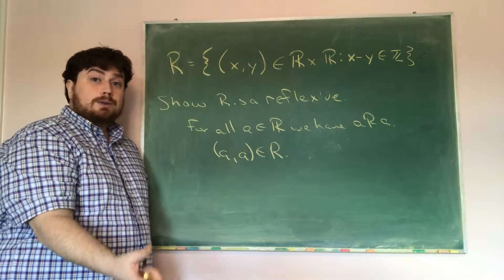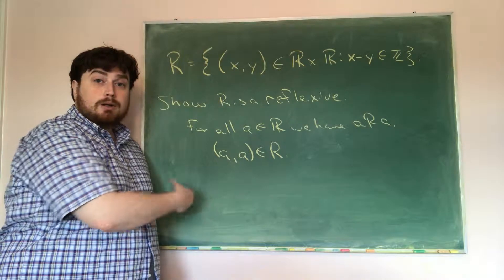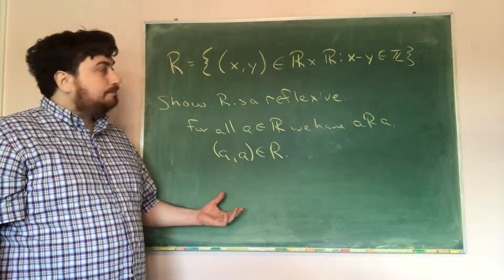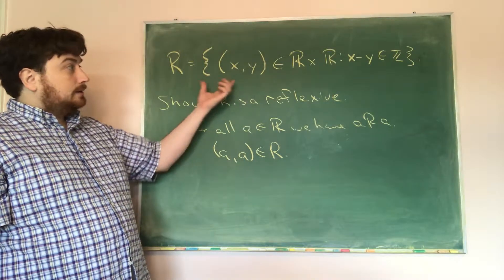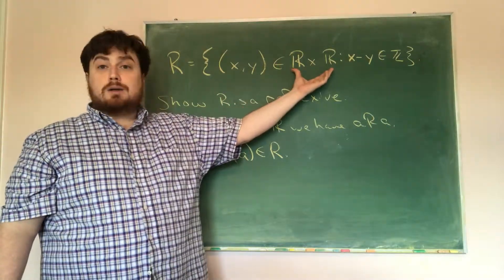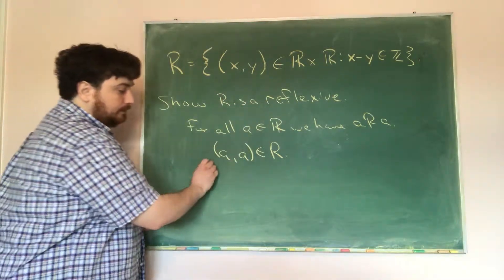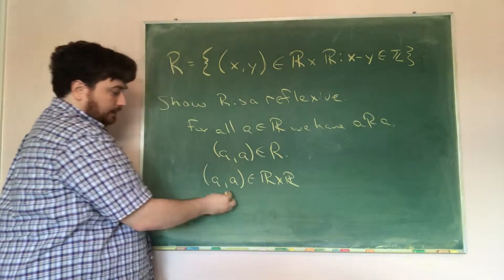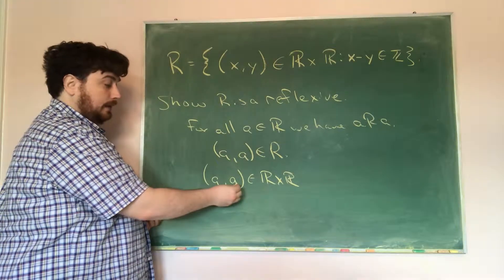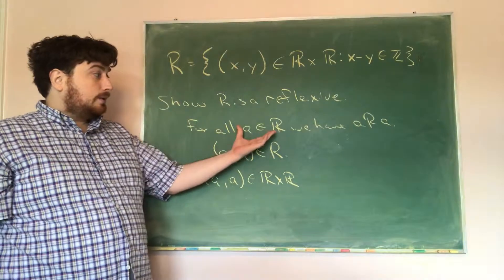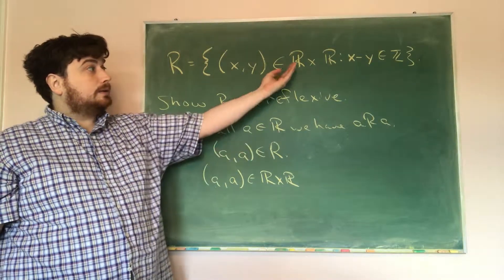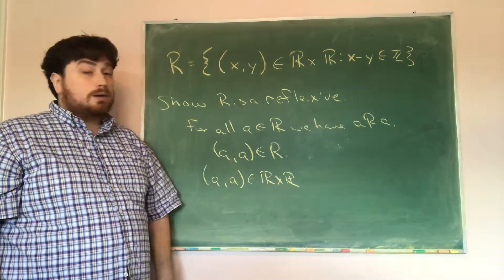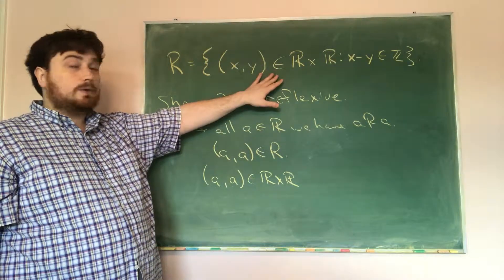What we want to show is that a is related to itself, or that the ordered pair (a, a) is in r. For (a, a) to be in r, it has to be an ordered pair in r cross r. To check that (a, a) is in r cross r, we ask: is a a real number? Yes, since we're showing reflexivity on the set of real numbers. Therefore, (a, a) is indeed an element of r cross r.